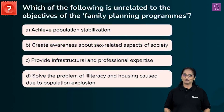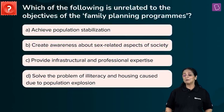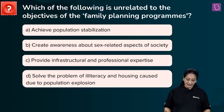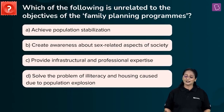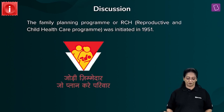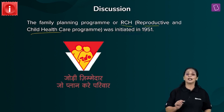A new question: Which of the following is unrelated to the objective of family planning programs? A. Achieve population stabilization. B. Create awareness about sex-related aspects of society. C. Provide infrastructural and professional expertise. D. Solve the problem of illiteracy and housing caused due to population explosion. The family planning program was introduced in India in 1951 under the name Reproductive and Child Healthcare Programs, or RCH.